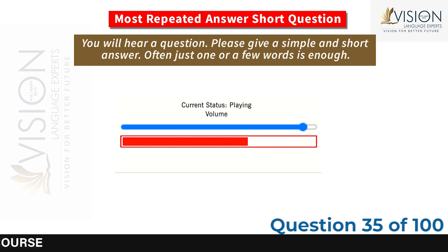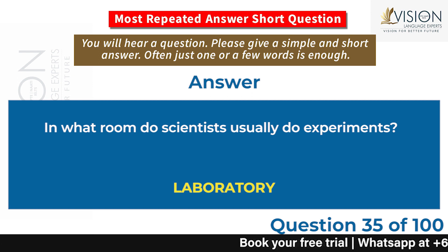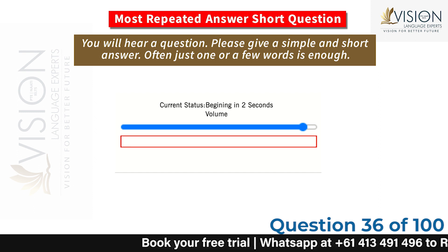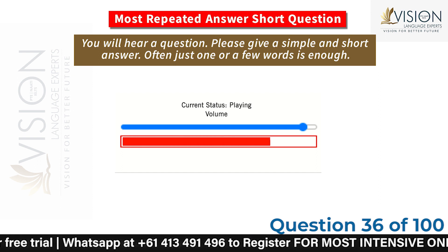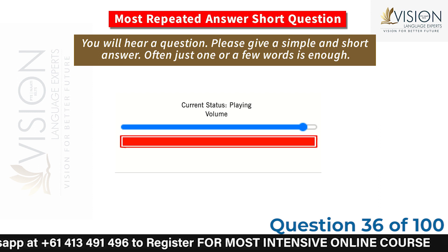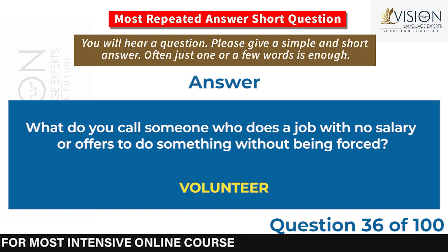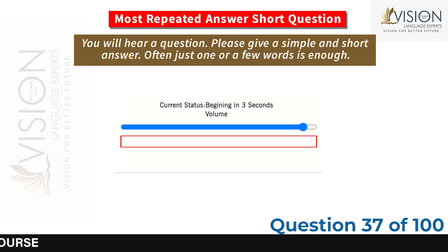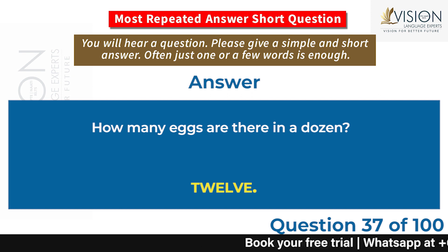In what room do scientists usually do experiments? Laboratory. What do you call someone who does a job with no salary or offers to do something without being forced? Volunteer. How many eggs are there in a dozen? 12.